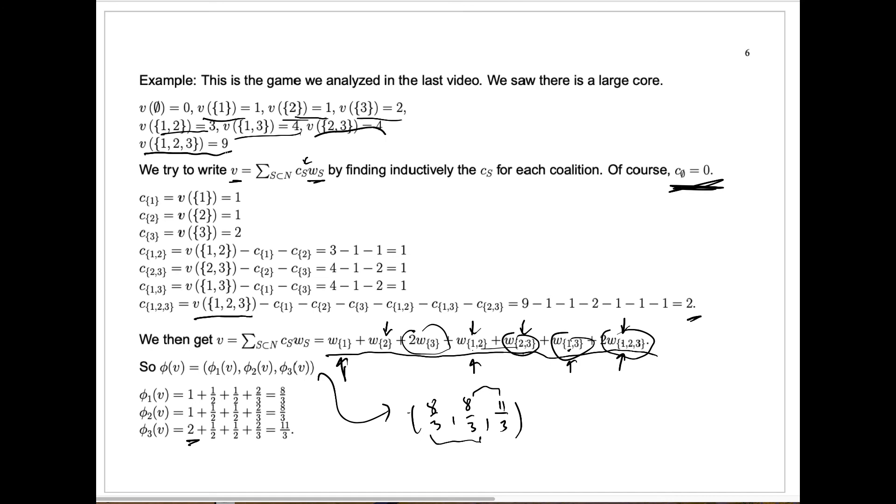So in this case, the Shapley value for this game in coalitional form for the characteristic function of the game is an imputation which is in the core and provides a nice stable payoff that should be fair to every player.